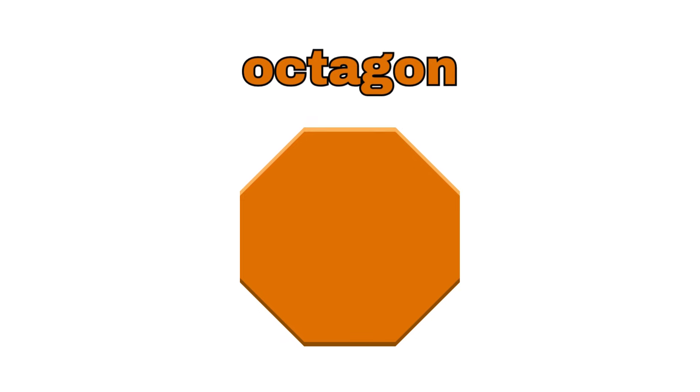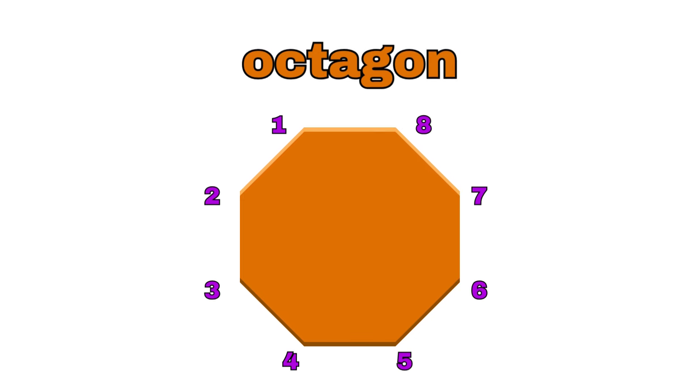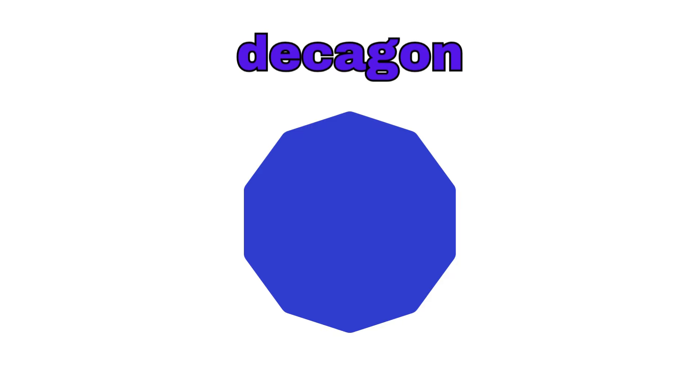Octagon. An octagon has eight corners. Decagon. A decagon has ten corners.